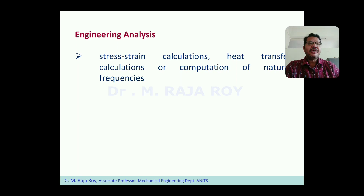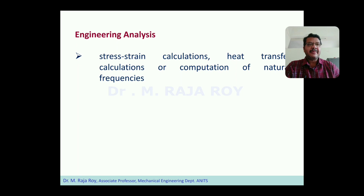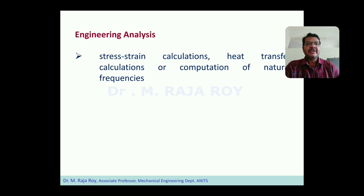If you go for engineering analysis, instead of destroying the component, in the computer itself you can apply the load on the virtual model and get the result — checking whether it is in the desired range. For example, to find the factor of safety: it is ultimate stress divided by working stress for brittle materials, or yield stress divided by working stress for ductile materials. You can find the working stress inside the computer system and calculate the factor of safety. If it is not within the desired range, you can modify the dimensions and redo the analysis.